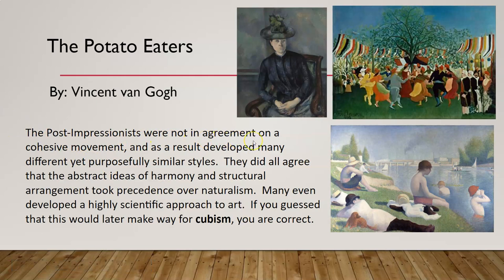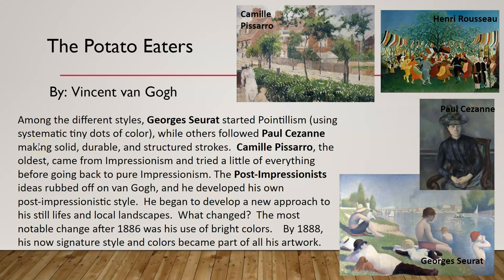The post-Impressionists were not in agreement on a cohesive movement — they weren't all saying this is exactly how you have to do this style. As a result, it developed many different yet purposefully similar styles. They did all agree on one thing: the abstract ideas of harmony and structural arrangement took precedence over naturalism. Many even developed a highly scientific approach to art, all leaning toward more abstract things and arrangement of elements on the page in a structural way. If you've guessed that this would later make way for cubism, you are correct.